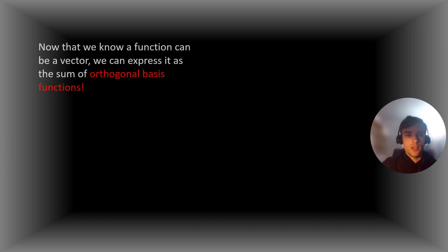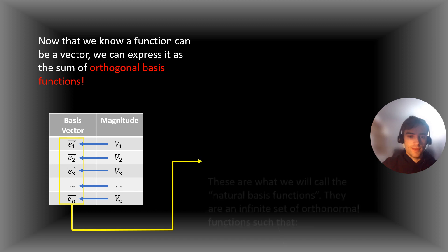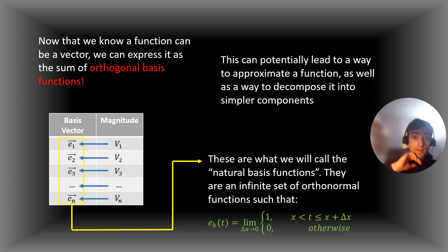So now that we know a function can be a vector, we can express it as the sum of orthogonal basis functions. There can be many different types of orthogonal basis functions that we could use. The type of basis functions we used in the last slide were what we call the natural basis functions. These are an infinite set of orthonormal functions — orthogonal functions that are also of magnitude one — defined as shown in the green math expression. This can potentially lead to a way to approximate a function, as well as a way to decompose it into simpler components.